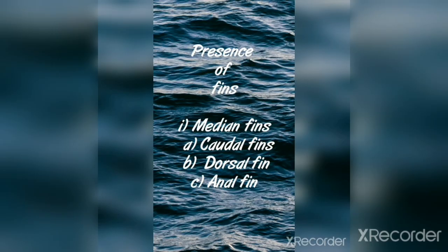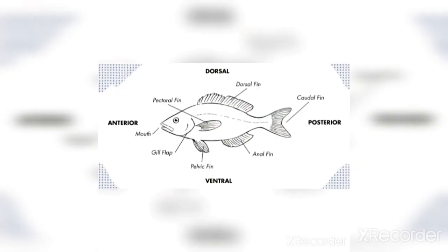The next fins are the pectoral fin and dorsal fin. The pectoral fin acts as a balancer and the dorsal fin acts as a stabilizer — stabilizer means keeping something stable.